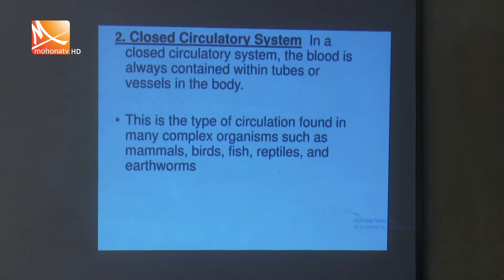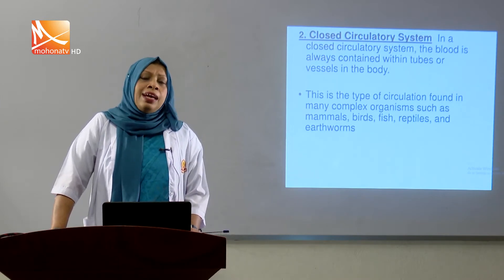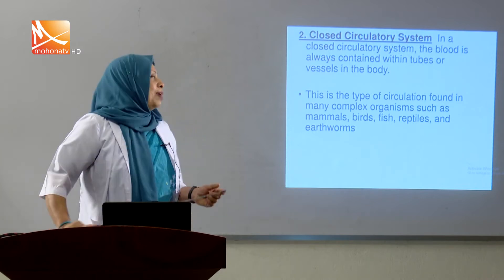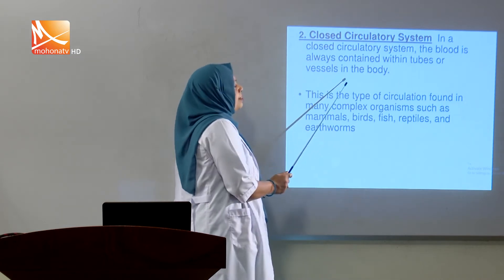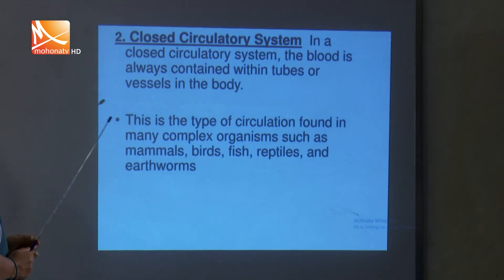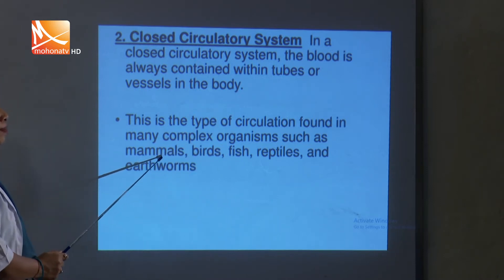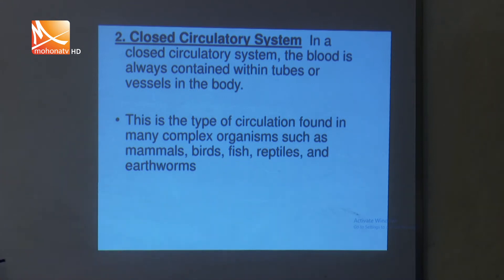In a closed circulatory system, blood is always confined within the heart and blood vessels and never comes out into the coelom. The blood is always contained within tubes or vessels in the body. This type of circulation is found in many complex organisms such as mammals, birds, fish, reptiles, and some invertebrate animals.